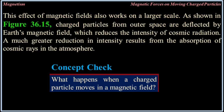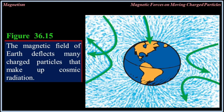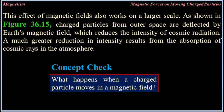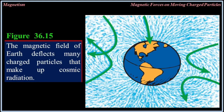This effect of magnetic fields also works on a large scale: charged particles from outer space are deflected by Earth's magnetic field, which reduces the intensity of cosmic radiation. A much greater reduction in intensity results from the absorption of cosmic rays in our atmosphere. Concept check: what happens when a charged particle moves in a magnetic field? The magnetic field of Earth deflects many charged particles that make up cosmic radiation.